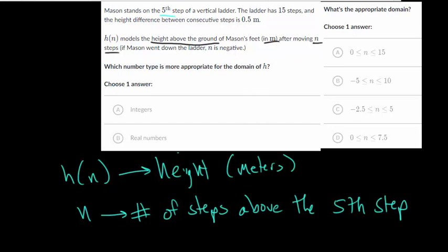So this one you have to be careful with, since when looking at what number type is appropriate for the domain, we're talking about steps here on the ladder. And in this case, he can only move in whole number steps, he can't go half a step up, because that would essentially just be air, there would be nothing for his foot to step onto.